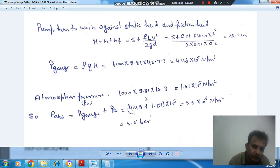That is your atmospheric pressure and that is the gauge pressure. So total absolute pressure is summation of these two: 4.49 plus 1.01 × 10⁵, so that is 5.5 × 10⁵.